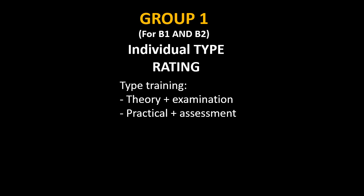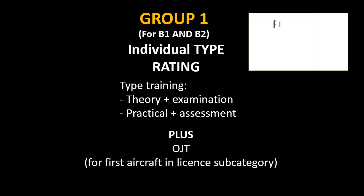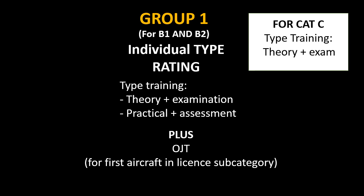If this is your very first aircraft type license of category B1 or B2, you will also need to have a certain on-job training. However, for category C, type training would only include theory and examination for all Group 1 aircrafts, for subcategories B1.1, B1.3, and B1.4.